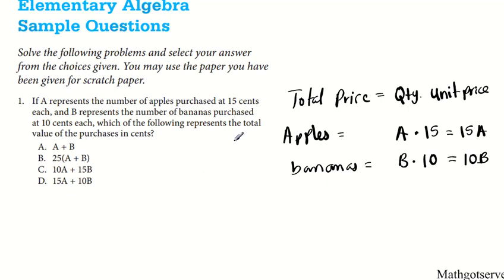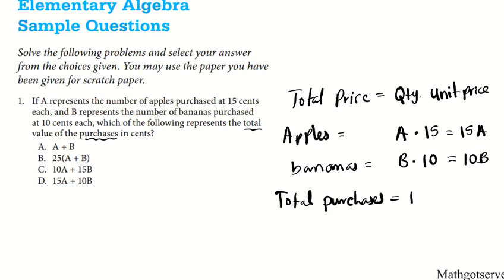We are asked for the total value of purchases — bananas plus apples. Total purchases is simply the sum of these two quantities, which is going to be 15A plus 10B. And that's option letter D.